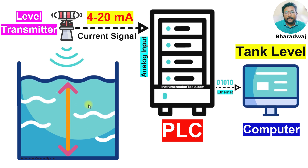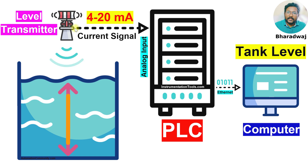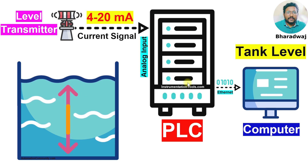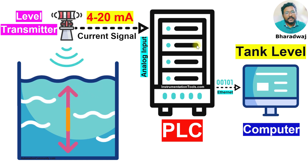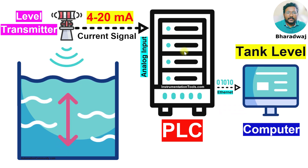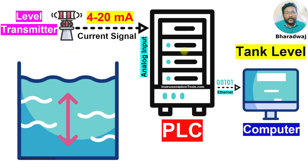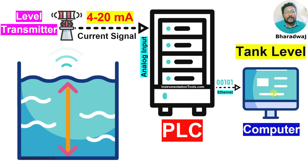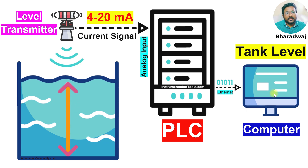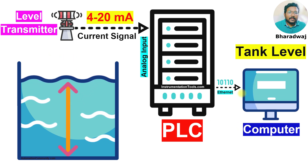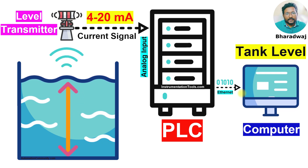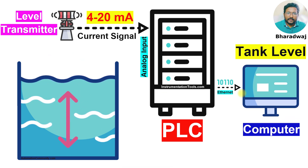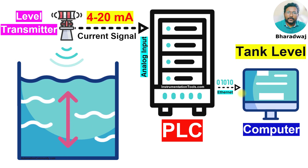This sensor measures the tank level and generates an equivalent current signal. That current signal is sent to the PLC. The PLC receives the signal and converts the value into digital format. Finally, the tank level will be displayed on the computer so that the operator or engineer can see the value of the tank level.